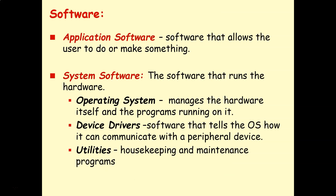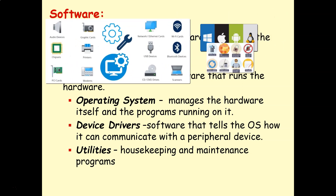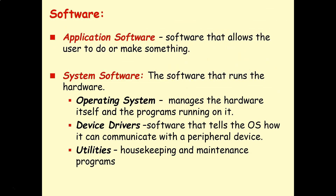Let's start with some definitions. Today we're going to be looking at application software — software that basically allows the user to do or make something. In the previous set of A-level lessons we looked at system software, which is the software that runs the hardware: your operating system, your device drivers, utilities, things like that. If you want to know more about system software, please consult an earlier series of videos.